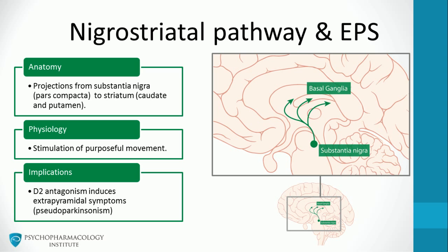D2 antagonism induces extrapyramidal symptoms. This is the case with first-generation antipsychotics. High-potency D2 antagonists, such as haloperidol, frequently cause pseudoparkinsonism.